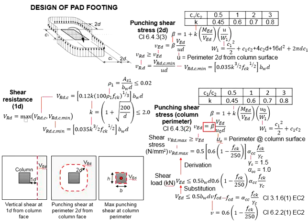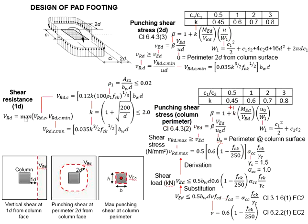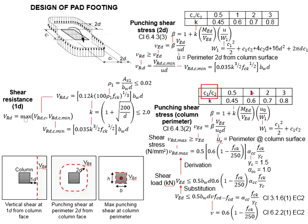This beta will define the influence of the moment acting onto the pad footing, affecting the punching shear stress at the column perimeter. We need to get k here, which is based on a table on the basis of the C1 to C2 ratio.